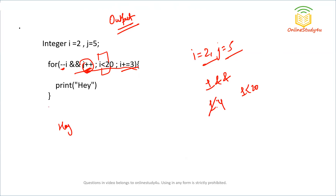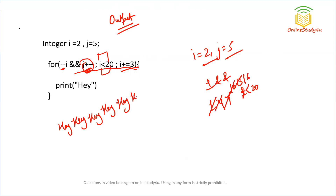After printing, i is updated by i plus 3. So i goes: 1, then 4, 7, 10, 13, 16, 19 — each time less than 20, so 'hey' is printed each iteration. When i becomes 19 plus 3 equals 22, which is not less than 20, we exit the loop. Counting the prints: 1, 2, 3, 4, 5, 6, 7 — so 'hey' is printed 7 times. That is the correct output.